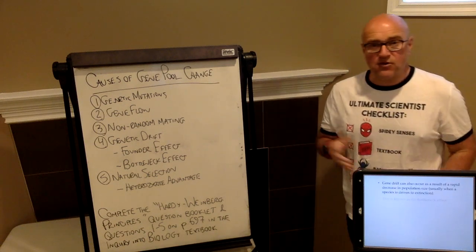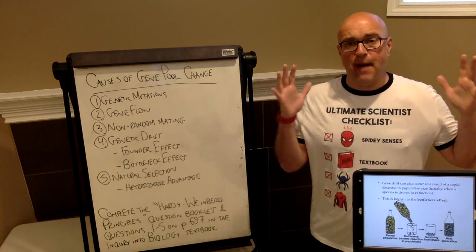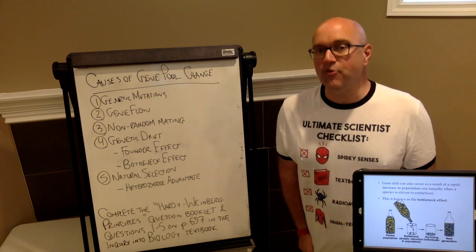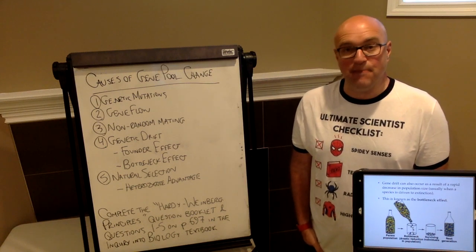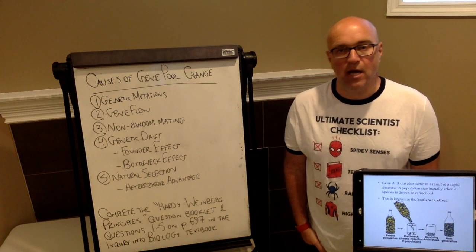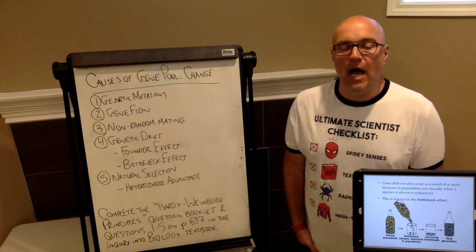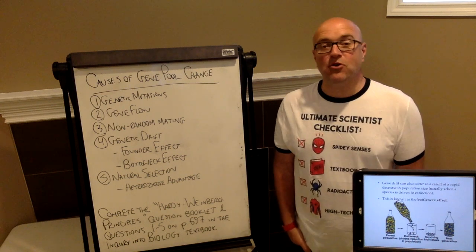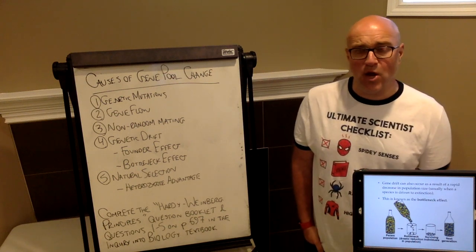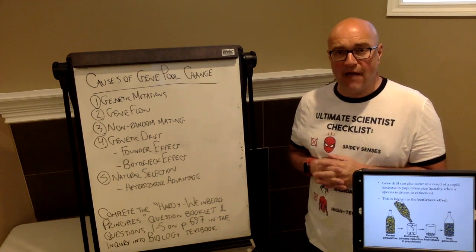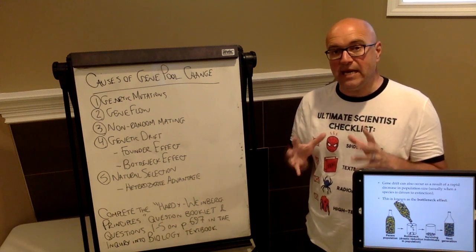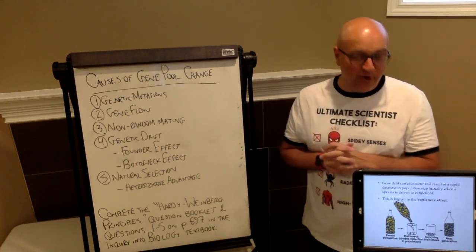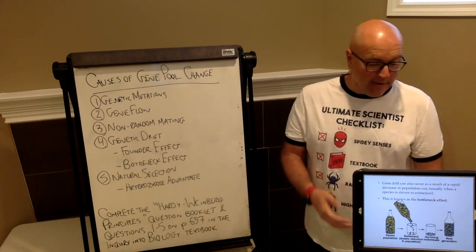Another example is bottleneck effect. The bottleneck effect is where we take a huge population of organisms and we basically decimate it or almost completely make it extinct. Humans have done this multiple times in our history. We talked about the bison almost being completely eradicated over North America from hundreds of millions of animals down to just a few thousand. We talked about the black-footed ferret, how they were down to only 18 animals.